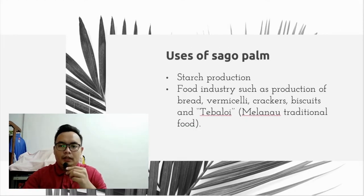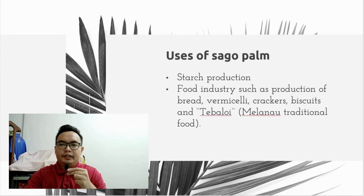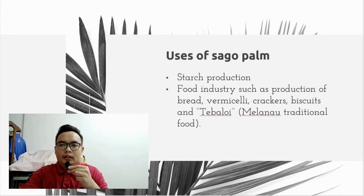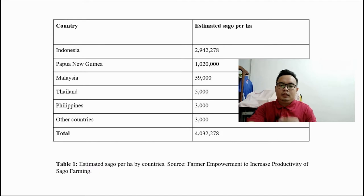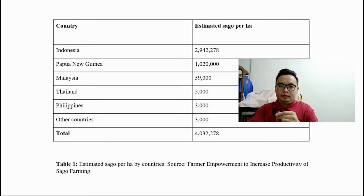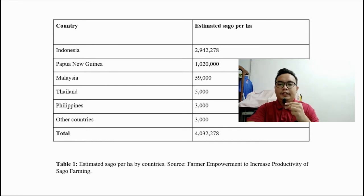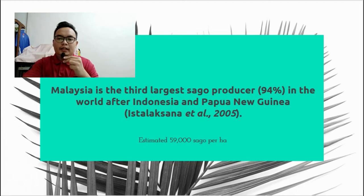Uses of Sago palm: Sago palm has various uses, not only in starch production, but also in the food industry, such as production of bread, vermicelli, crackers, biscuits, and also tebaloi, which is a Melanau traditional food. Here in Table 1, it shows the estimated Sago area per hectare by countries. Malaysia is the third largest Sago producer, about 94% in the world after Indonesia and Papua New Guinea, as stated by Ista Laksamana et al., 2005, with an estimated 59,000 hectares.